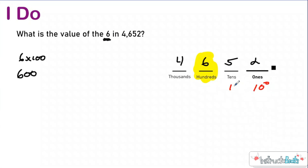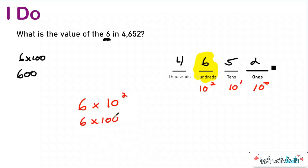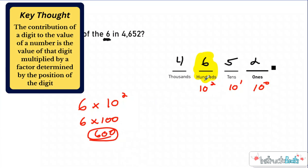The long way is to realize that it is in the second position to the left of the ones place. So you had six groups of 10 to the second power — or 10 squared — which is really six times 100, which still gives you 600. The contribution of the six to the value of the number was the value of the digit (which is six) multiplied by a factor determined by the position of the digit. Either way works — one way is obviously very quick and easy, and one way is a little overcomplicated. But the overcomplicated way will help you get a little bit farther in math.